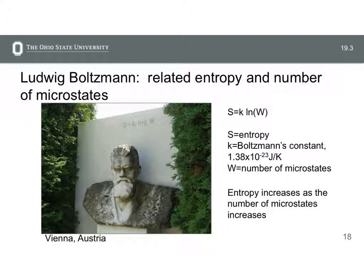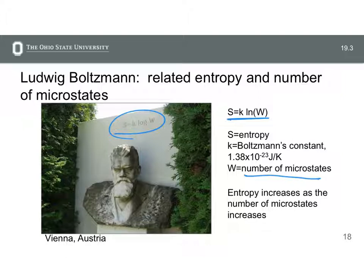A bit of history: Ludwig Boltzmann has the equation relating entropy and microstates on his grave in Vienna, Austria. The equation is S = k ln(W), where k is the Boltzmann constant and W is the number of microstates. This equation says that entropy increases as the number of microstates increases. When W equals one — only one microstate — the natural log of one is zero, so entropy equals zero.